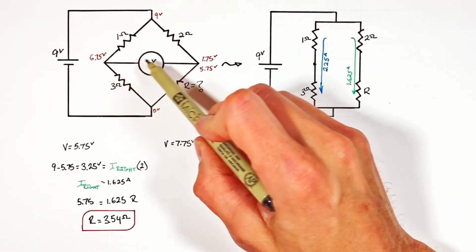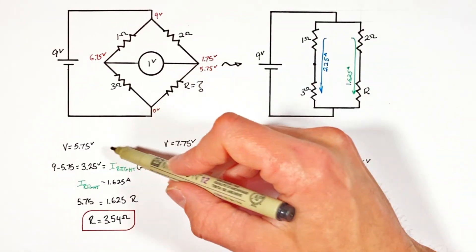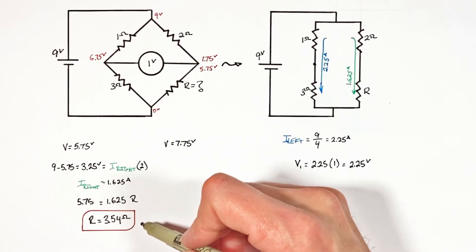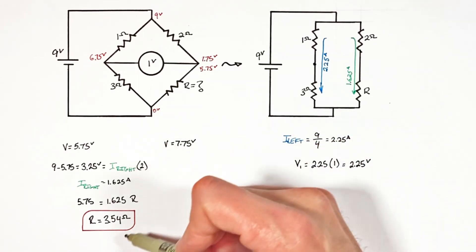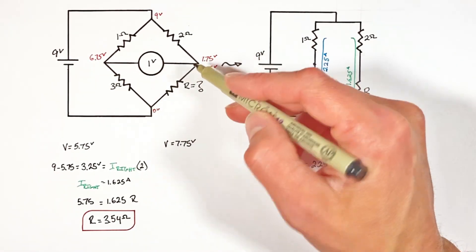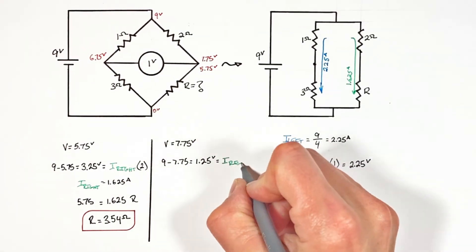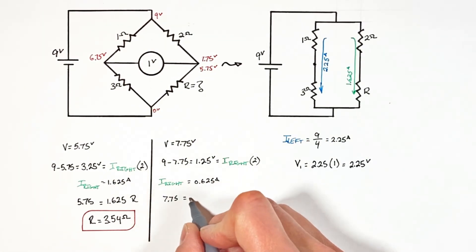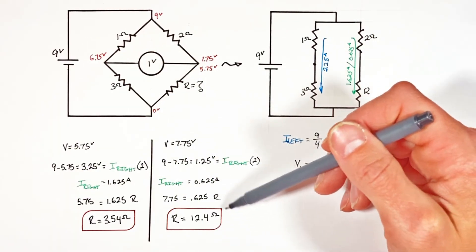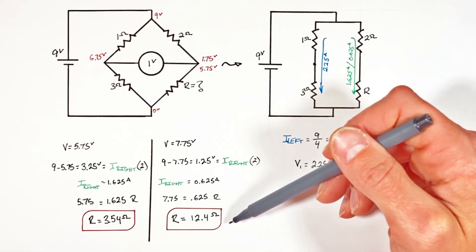So if there's a one volt drop across this bridge that means this unknown resistor has a value of 3.54 ohms. And we can do a similar sort of calculation as though there had been a 1 volt increase across this bridge. And in that case we find our unknown resistor has a value of 12.4 ohms.